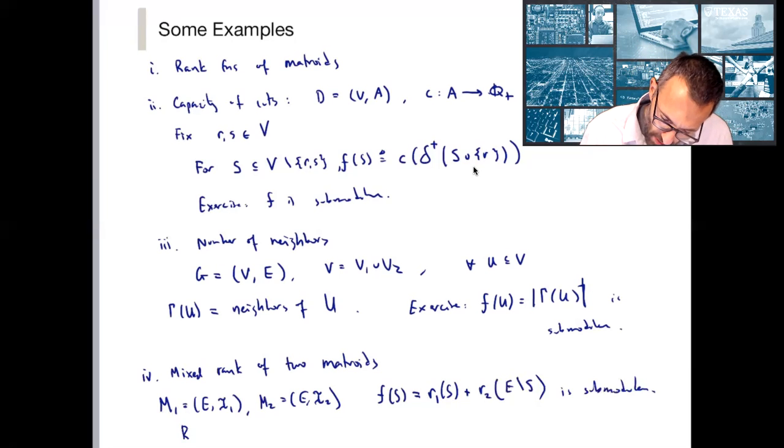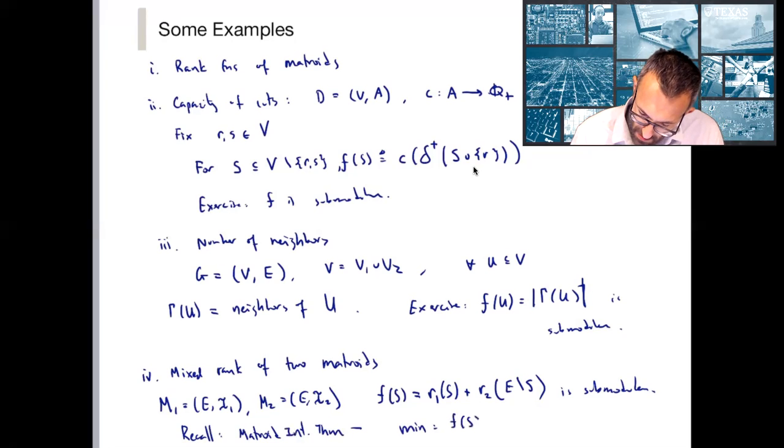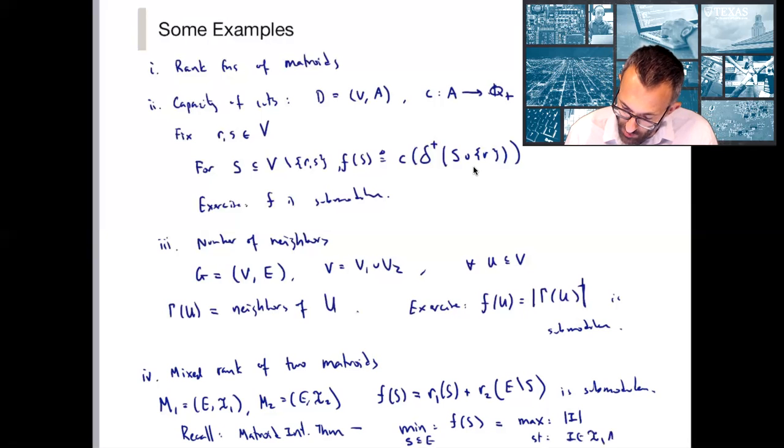And you'll remember from our earlier lectures on matroid intersection, we proved the matroid intersection theorem, which says that the minimum of F of S over all subsets of the ground set is in fact equal to the maximum cardinality common independent set. That's equal to the maximum cardinality of I, where I belongs to both the independent sets of matroid one and matroid two.